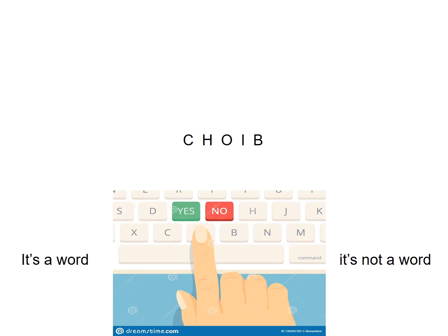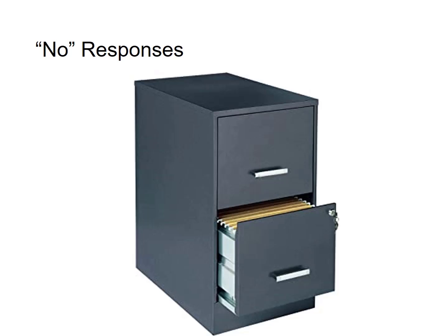What would you do on this trial? The letters are C-H-O-I-B. You would likely press the right key because it doesn't make up a real word. What would you respond in this case? The letters are T-H-R-E-W. Yes, that's a word. In a typical lexical decision experiment, you might receive a hundred or two hundred trials. Back in the late 1800s, James Cattell observed that when participants are given real words and non-words to respond to, they always took longer to respond to the non-words — to say no, that is not a word.